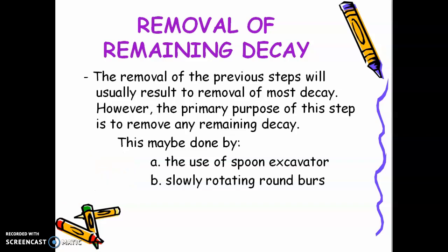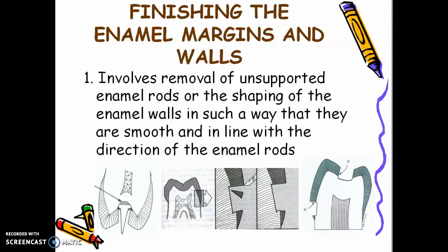Next is finishing of enamel margins and walls. When you finish the enamel margins and walls, it involves removal of unsupported enamel rods, or the shaping of the enamel walls in such a way that they are smooth and in line with the direction of the enamel rods. If there are thin enamel rods in that area, you have to remove them.